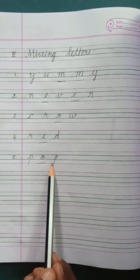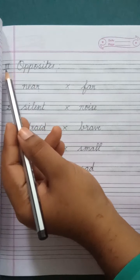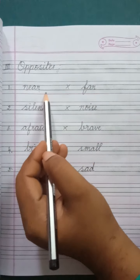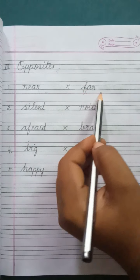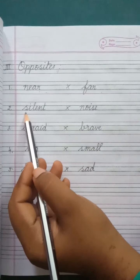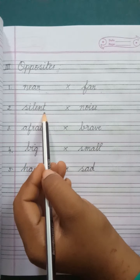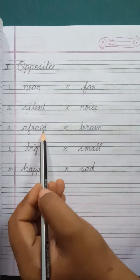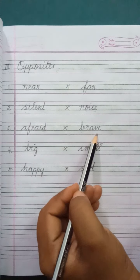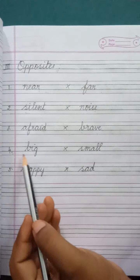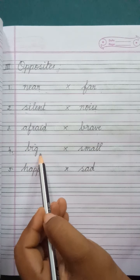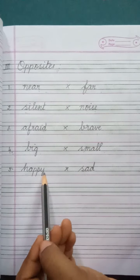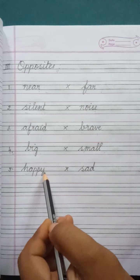Come to Roman Letter 3: Opposites. Number 1: Near — the opposite for Near is Far. Number 2: Silent — the opposite for Silent is Noise. Number 3: Afraid — the opposite for Afraid is Brave. Number 4: Big — the opposite for Big is Small. Number 5: Happy — the opposite for Happy is Sad.